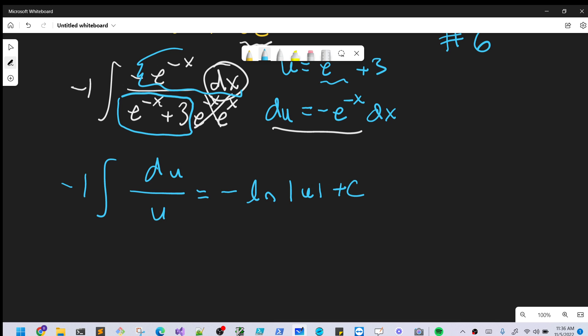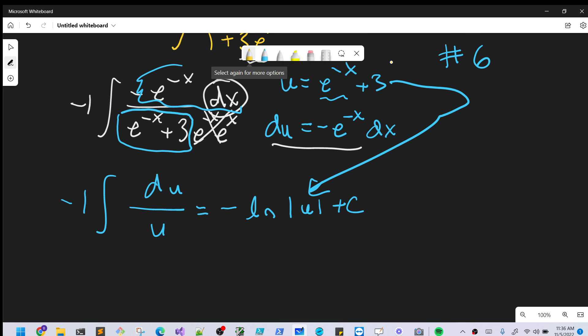Then we do our back-substitution. Plugging that in for our final answer, we have -ln|e^(-x) + 3| + C. And we're done. MIT Integration Bee 2010, problem number 6. Pretty easy one.